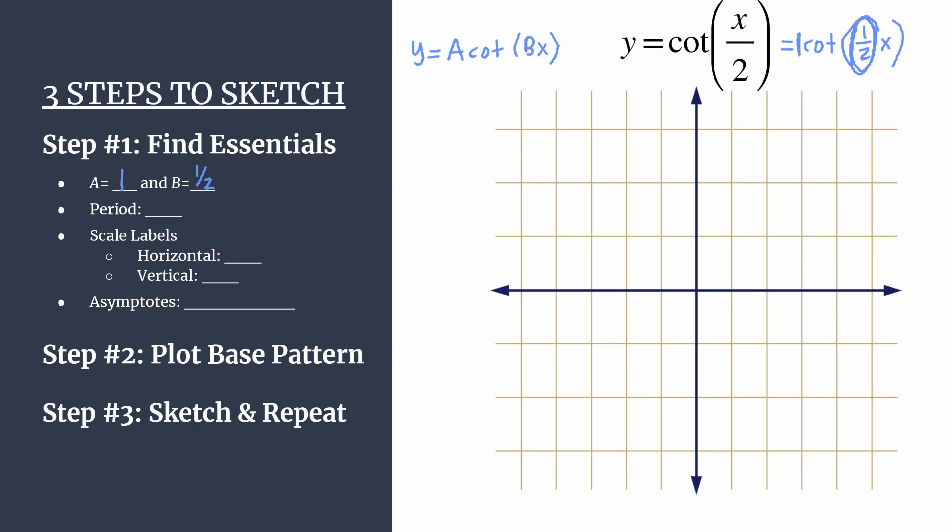And it also helps us calculate the period. For cotangent, we do that using the formula pi divided by b. Do know that because we're dividing by a fraction, it's the same thing as multiplying by the reciprocal. So pi divided by 1 half is actually going to be 2 pi for our period. And again, period is just the length of a horizontal cycle.